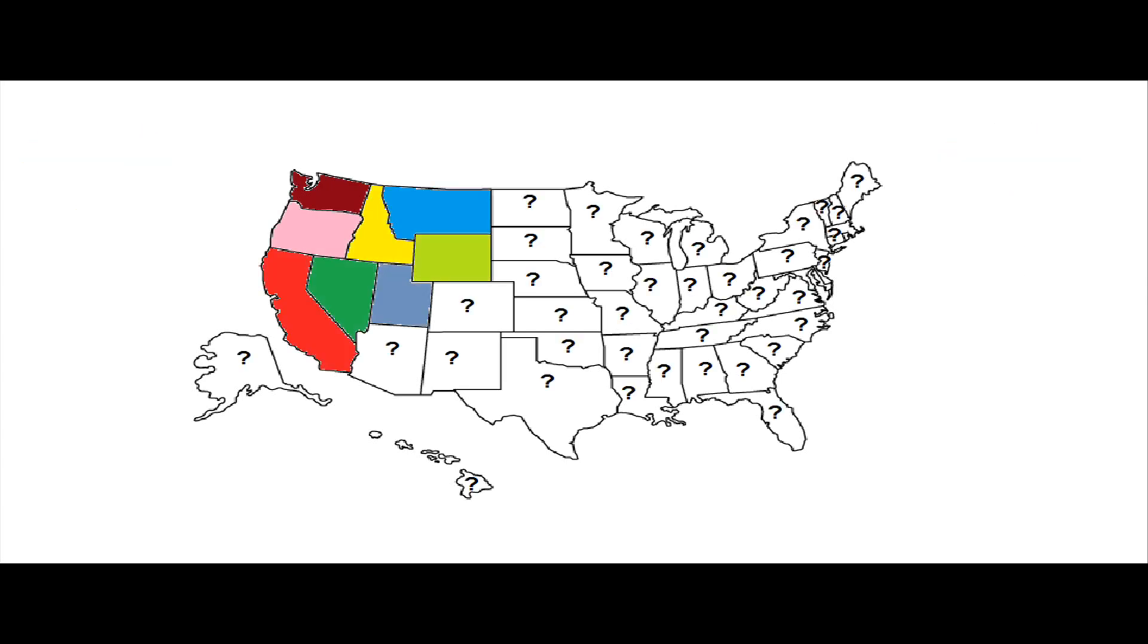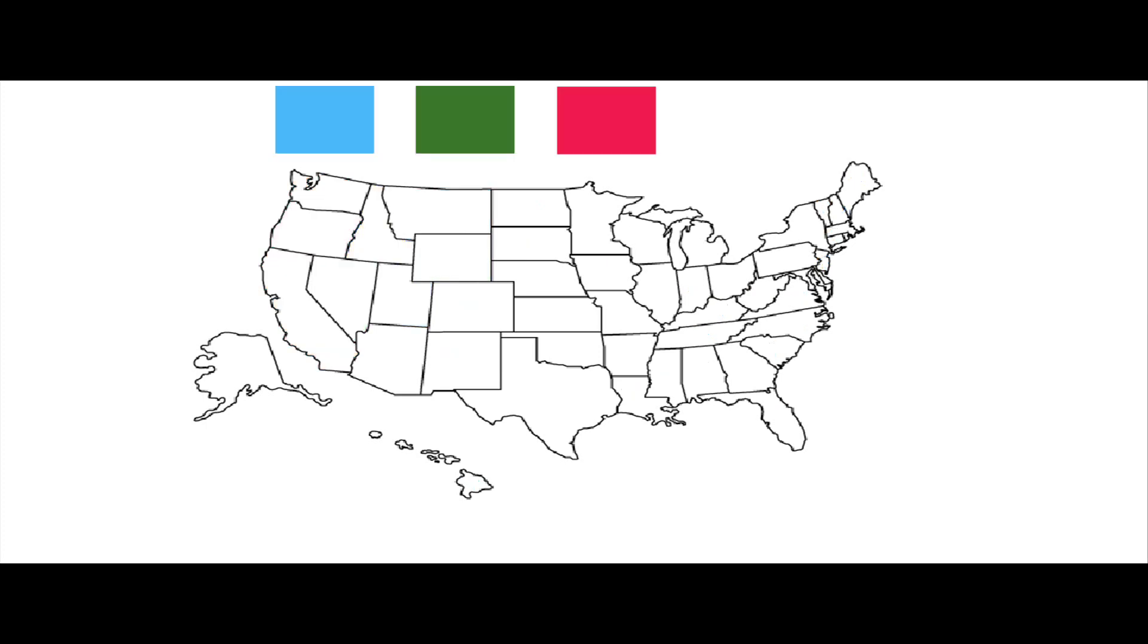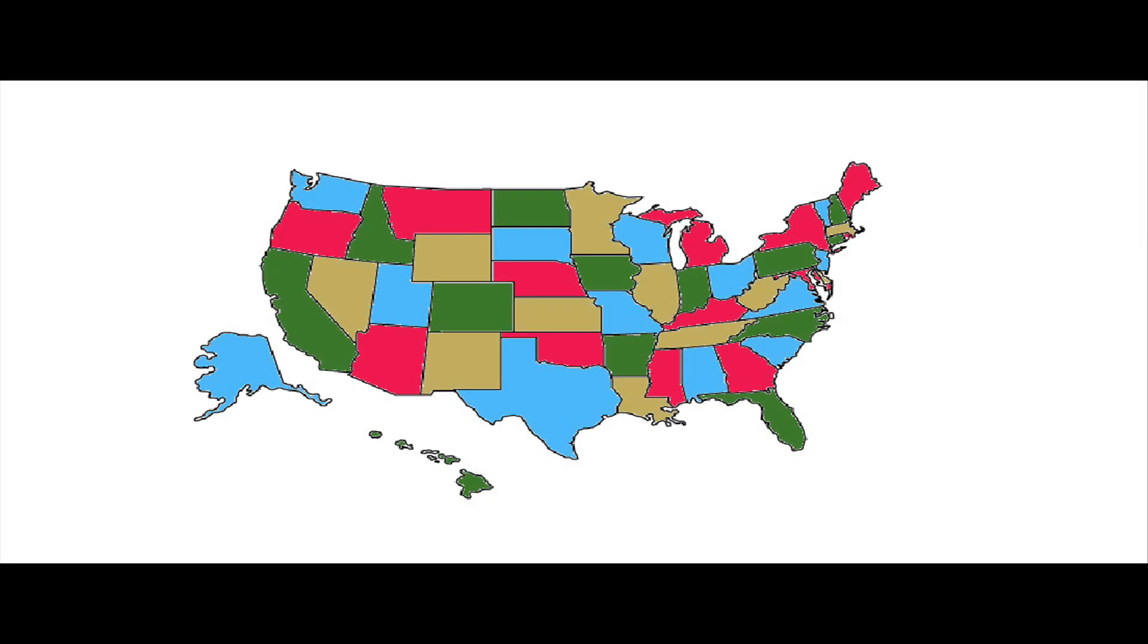Well, how many colors would we need? The answer is only four. That's right, using only four colors, we can color in each state so that it is clearly distinct from the next state.